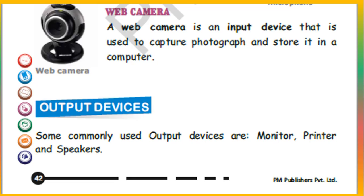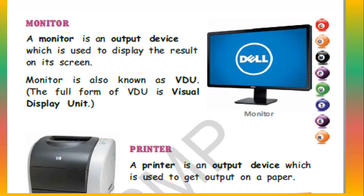Now we will study about output devices. Some commonly used output devices are monitor, printer and speakers. Monitor — a monitor is an output device which is used to display the result on its screen. Monitor is also known as VDU. The full form of VDU is visual display unit.